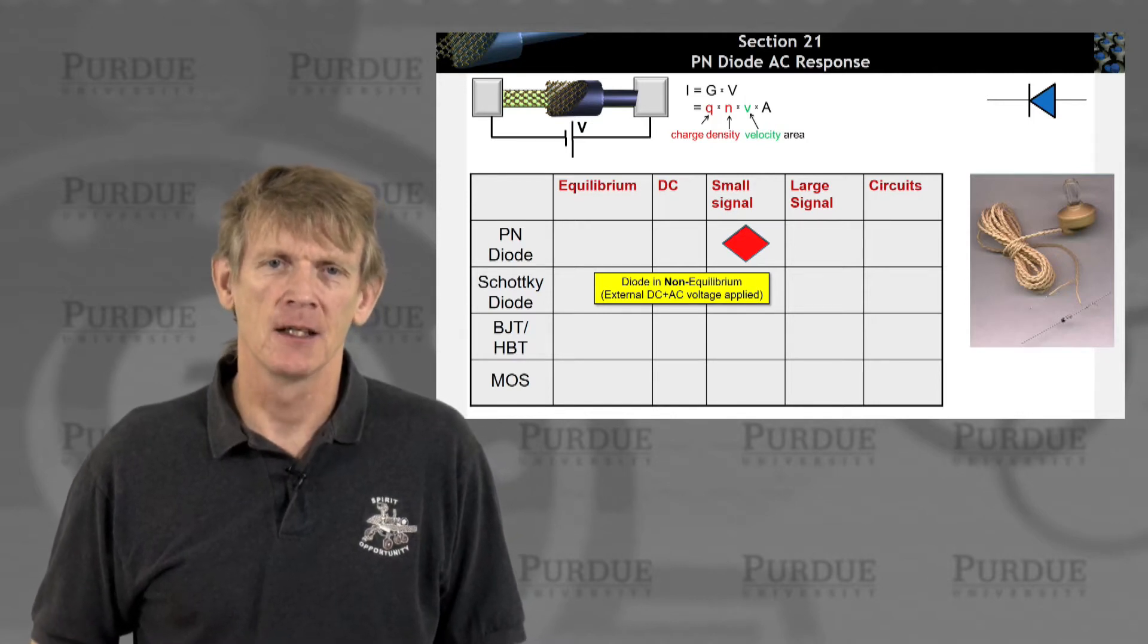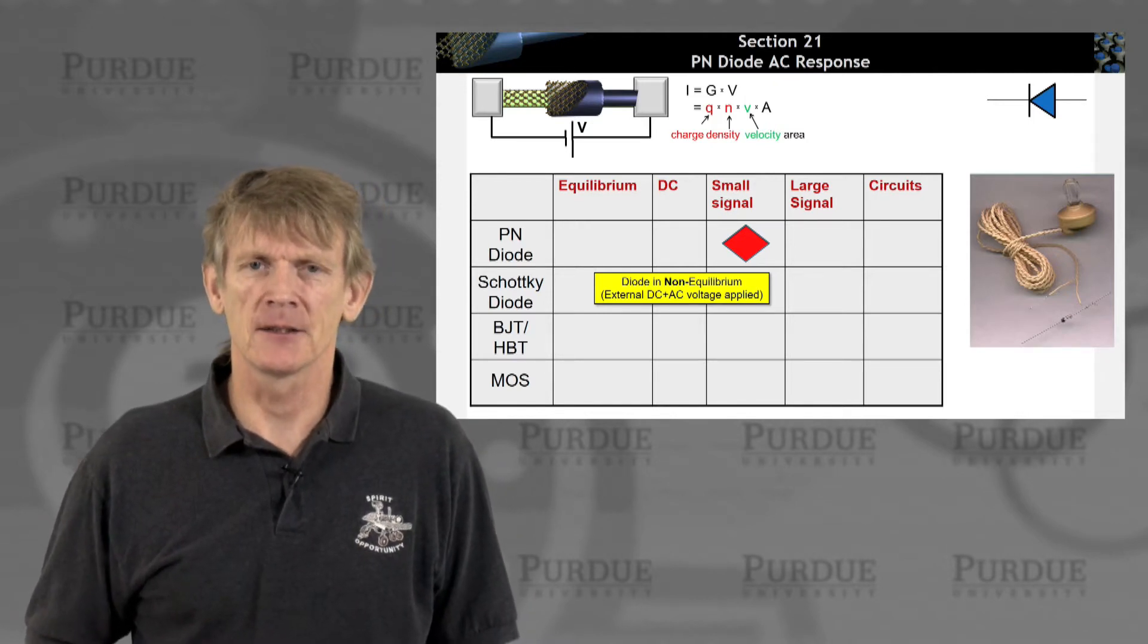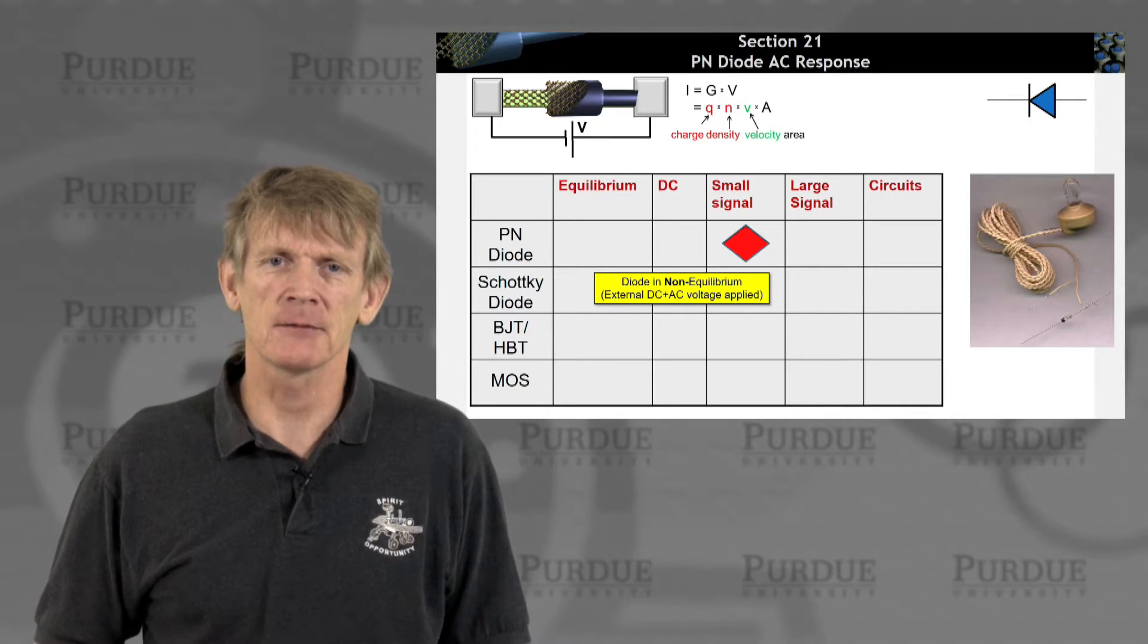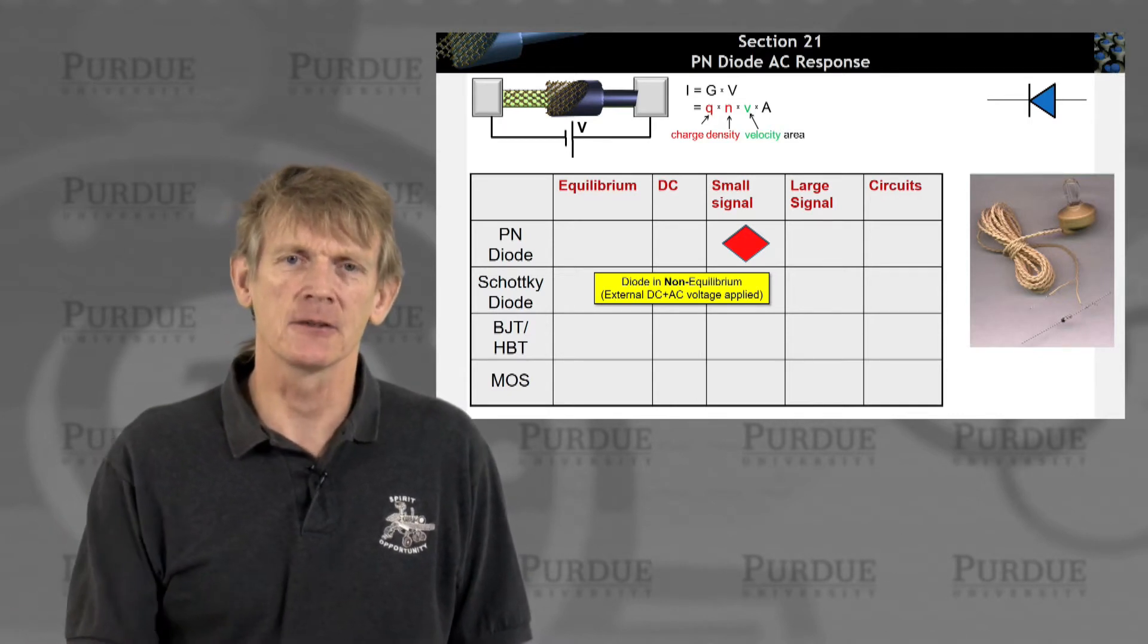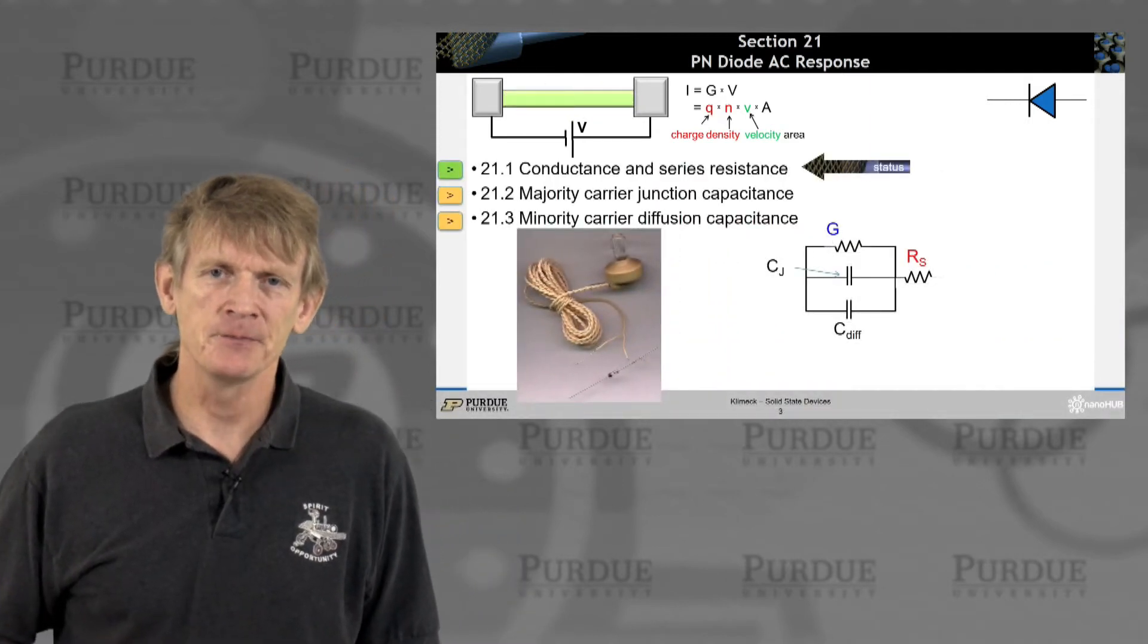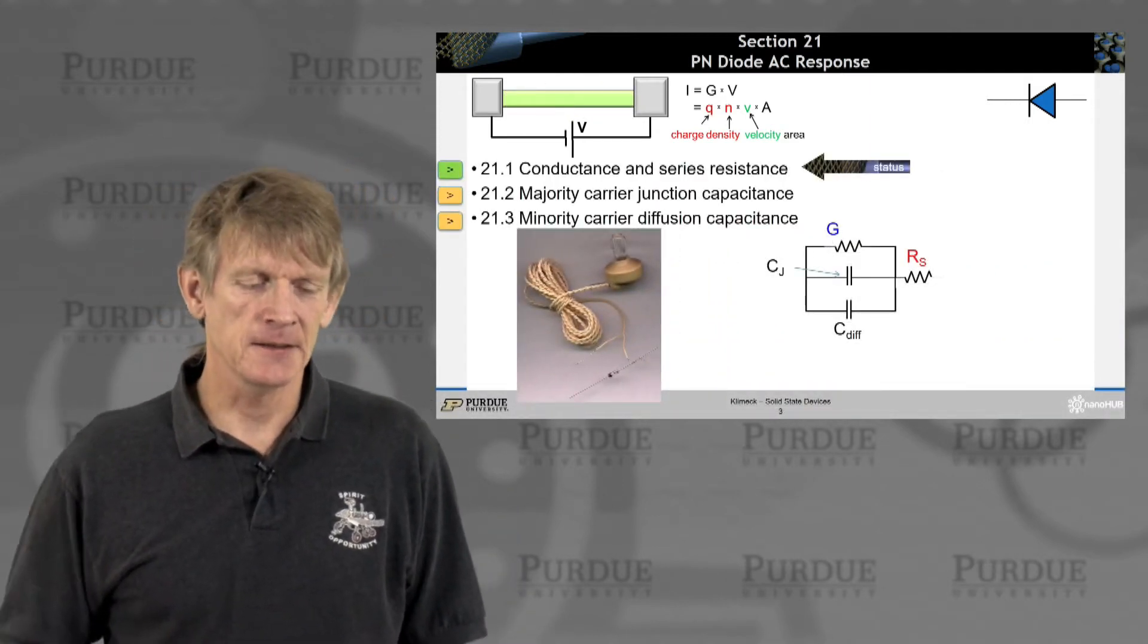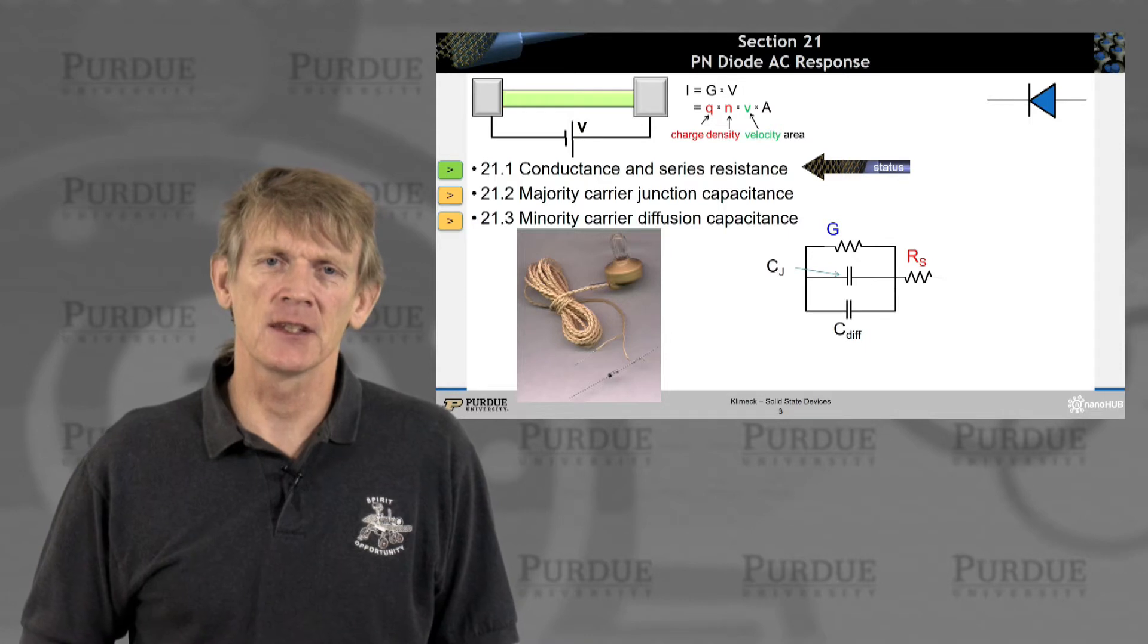We're making progress towards understanding transistors and alike. Let's look at the small signal AC response of a diode. If you're a tinkerer, you might recognize this as an antenna. We'll use this as an introduction.